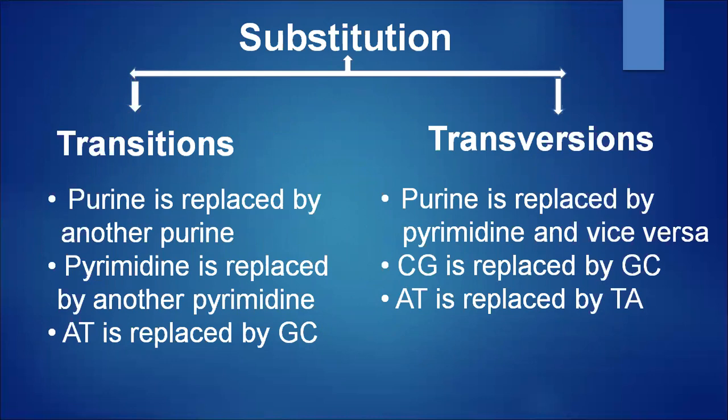Substitution mutations involve the substitution of one nitrogenous base for another. They occur in two ways: transitions and transversions. In transitions, a purine is replaced by another purine, or a pyrimidine is replaced by another pyrimidine — for example, AT is replaced by GC.